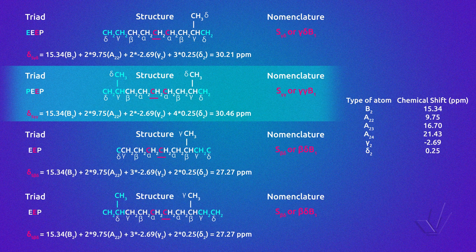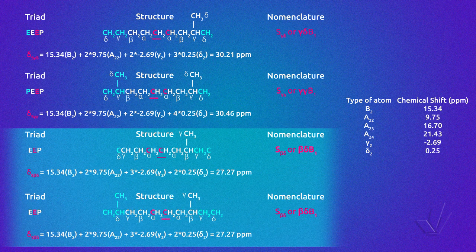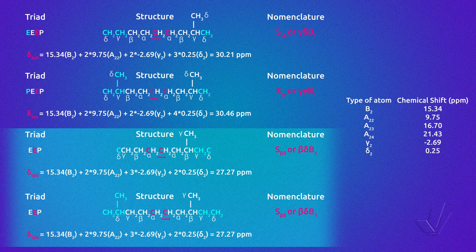If the unit on the left is a propylene, we have the tetrad PEEP, and the first carbon of the central unit is called S gamma gamma. In this case it has four delta carbons, and the chemical shift is 30.46 ppm. The second carbon in the EEP central unit has only the resolution of the triad — no matter which units are adjacent to the triad, its chemical shift is the same, 27.27 ppm. By its position in the molecule, this carbon is named S beta delta, having two secondary alpha carbons, three gamma carbons, and two delta carbons in the neighborhood.